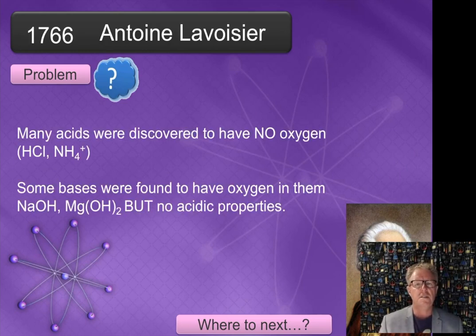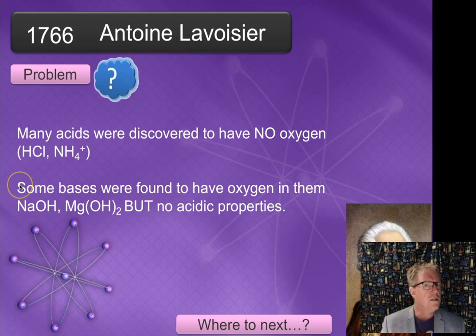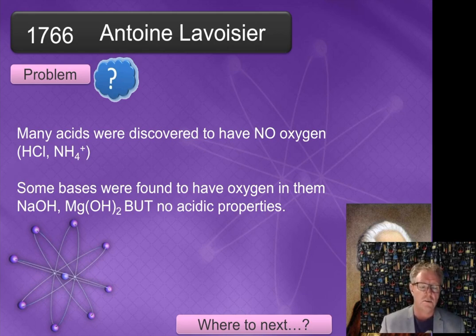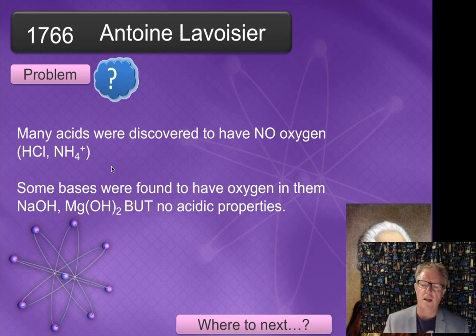However, there was a problem because many acids did not have oxygen in them. For example, HCl doesn't have oxygen in it, but it's an acid. Ammonium iron does not have oxygen in it, but it's an acid. And to complicate things more, some bases had oxygen in them but were not acidic — for example, sodium hydroxide and magnesium hydroxide. So the fundamental theory that acids contain oxygen started to break down from experimental observation, and we had to modify our theory.